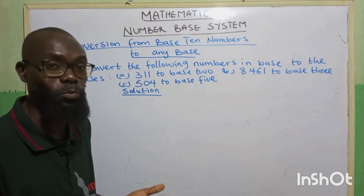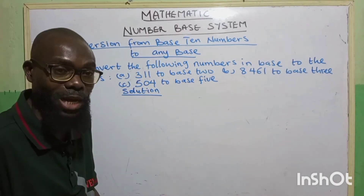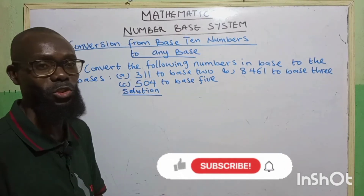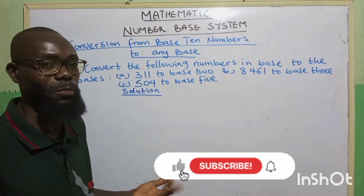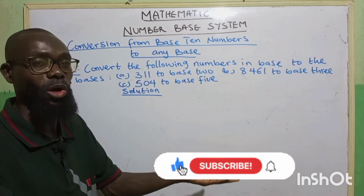Any other base could be the binary number itself, which is base 2, could be base 3, base 4, base 5, and so on.